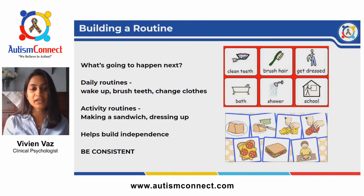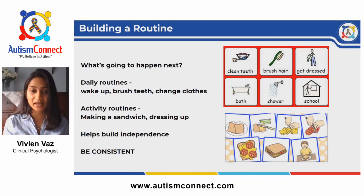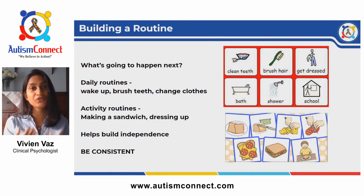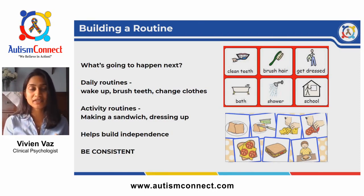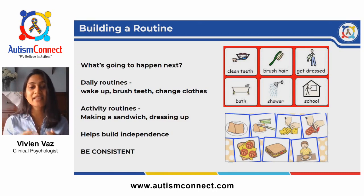You might want to think about different routines to teach your child — for example, their daily routine from wake-up to bedtime, or something more specific like a bathing or dressing routine. You might even want to teach them how to make a sandwich or use the microwave. All these routines have steps. Break the routine down into steps and do the same steps in the same order and in the same way every time.